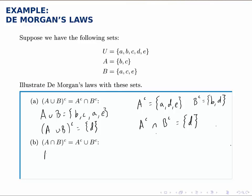Part B works similarly. We take A intersect B. What's common to A and B? Well, C is the only letter that appears in both sets. And then if we take the complement of that, we're looking for everything in the universe except for this one element C. So that would be A, B, D, and E.